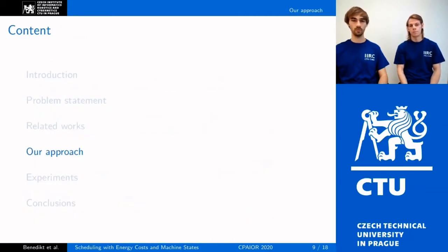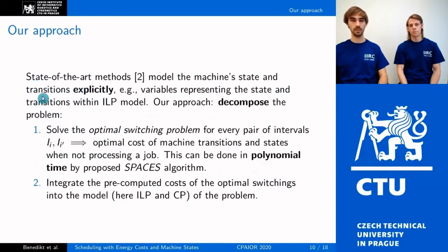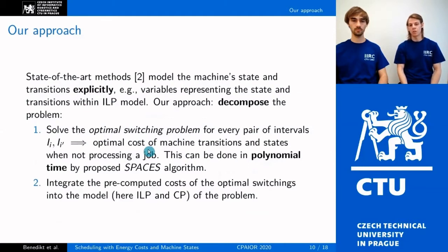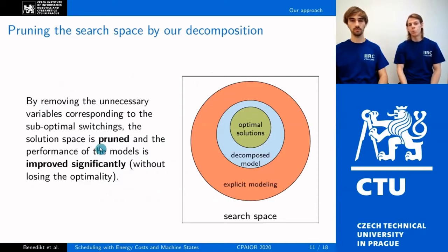Now let's look at how we solve the problem. Contrary to previous approaches that model machine states and transitions explicitly, we decompose the problem into two phases. The first phase pre-processes the instance by solving an optimal switching problem for every pair of intervals, giving us the optimal cost of machine transitions between two intervals. The second phase integrates the pre-computed costs into specialized ILP and CP models solved by off-the-shelf solvers. The efficiency of our approach lies in pruning the solution space by eliminating suboptimal switchings which are part of the solution space explored by explicit models.